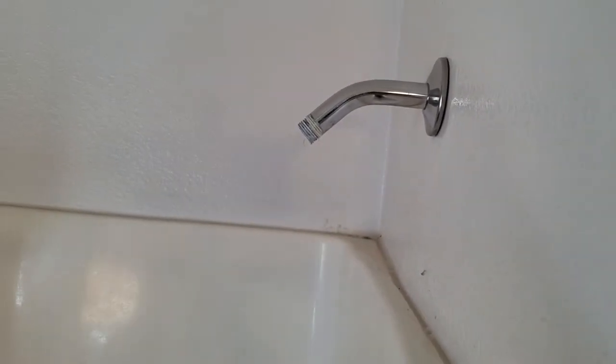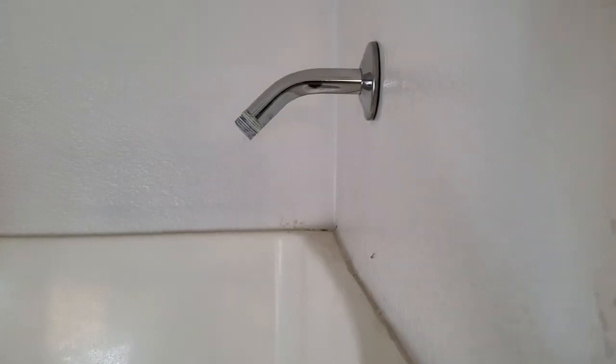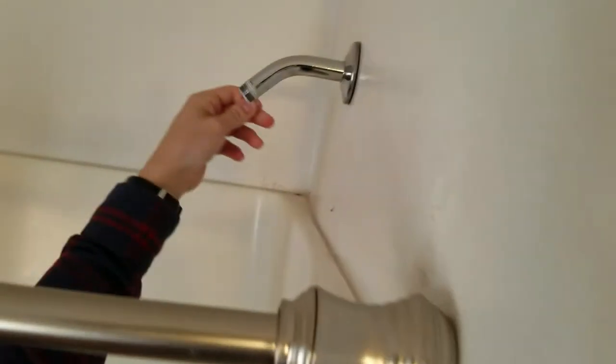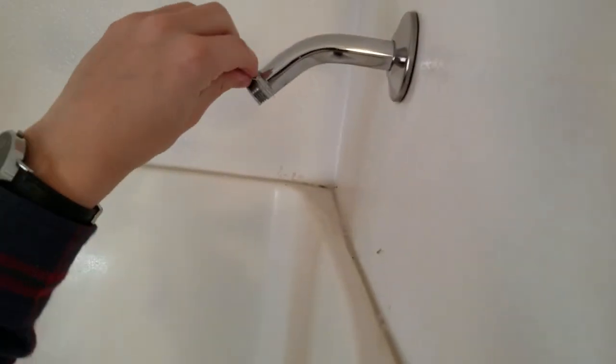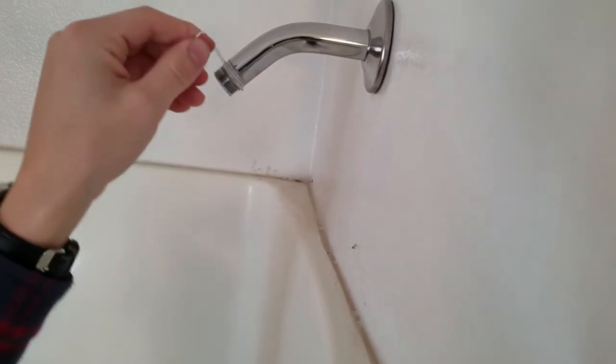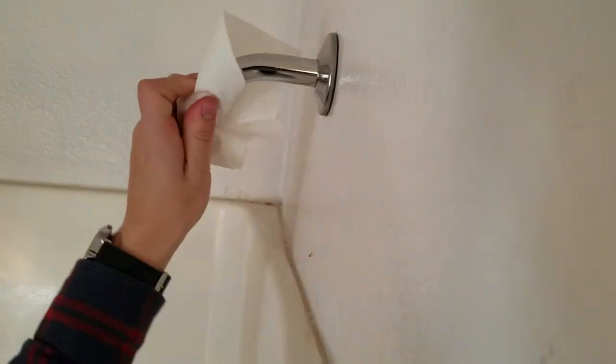You don't have to turn off the water at the main because it's turned off right here. So if there's some plumber's tape already on the threads, you'll want to pull that off like Lanan's doing right now. Just wipe